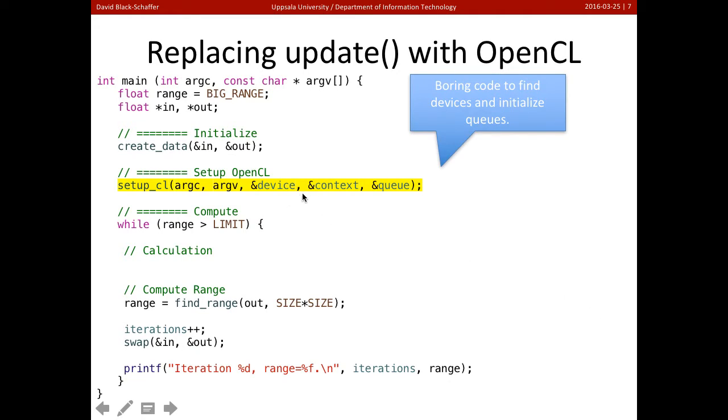First, we need to go in and we need to set up OpenCL. So here we're going to have to find the OpenCL device, the context, and create a queue for submitting the commands. Then within our loop here, we're going to go through and we're going to replace our calculation with update OpenCL.